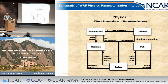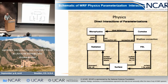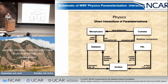When I look at the way WRF does its parameterizations, we see mainly five: cumulus parameterization, microphysics, radiation, PBL, and surface. What we gain largely when we go to convective permitting is we don't need cumulus parameterizations as much — less emphasis on cumulus and more on microphysics, PBL, and land surface.